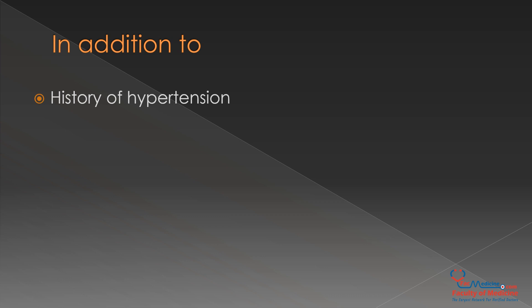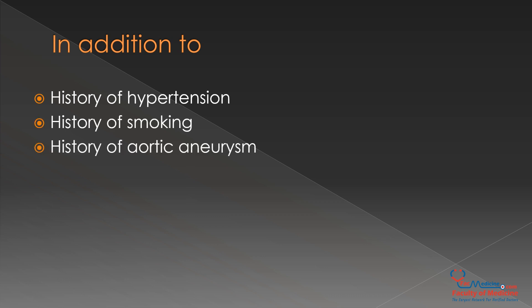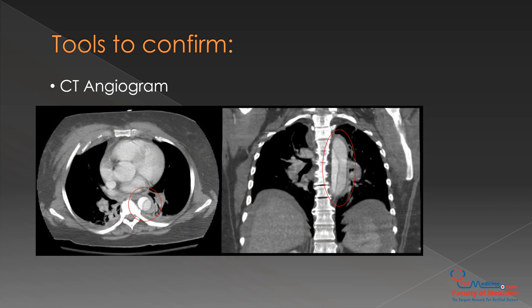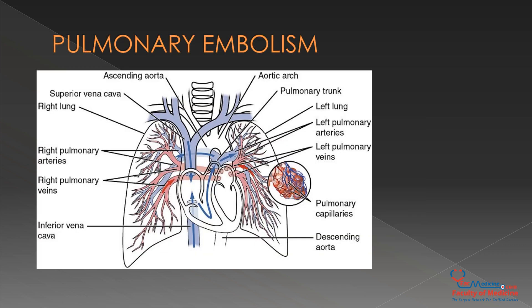In addition, we need to ask about the history of hypertension, smoking, and whether an aortic aneurysm was previously diagnosed. The tool to confirm aortic dissection is CT angiogram. As seen in the CT, the aortic wall is bulging and there is escape of blood from inside the aorta to the outside.